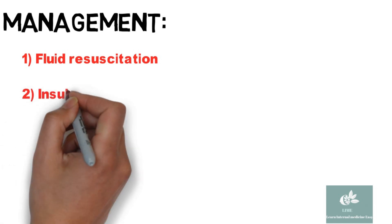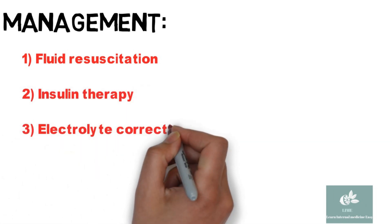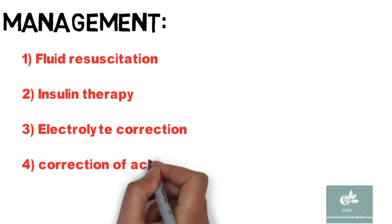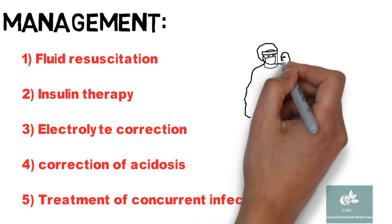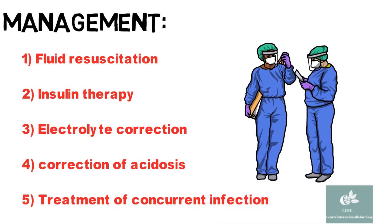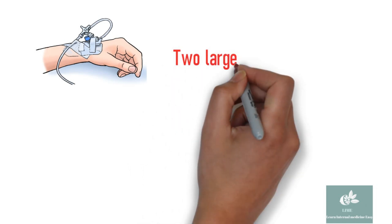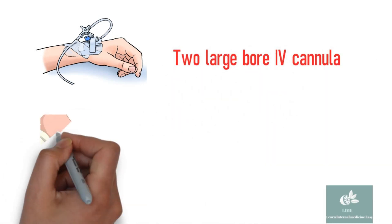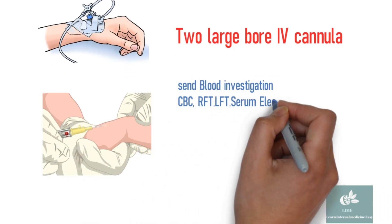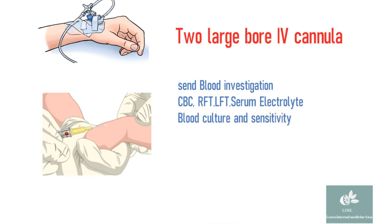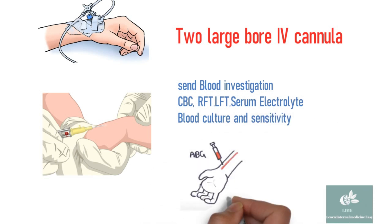When treating DKA, points that must be closely monitored include fluid resuscitation, insulin therapy, electrolyte correction, acidosis correction, and treatment of concurrent infections. Managing DKA in an intensive care unit during the first 24 hours is always advisable. Secure two IV lines, preferably large-bore IV cannulas, and send routine blood investigations including CBC, RFT, LFT, serum electrolytes, blood culture and sensitivity. ABG is also mandatory.